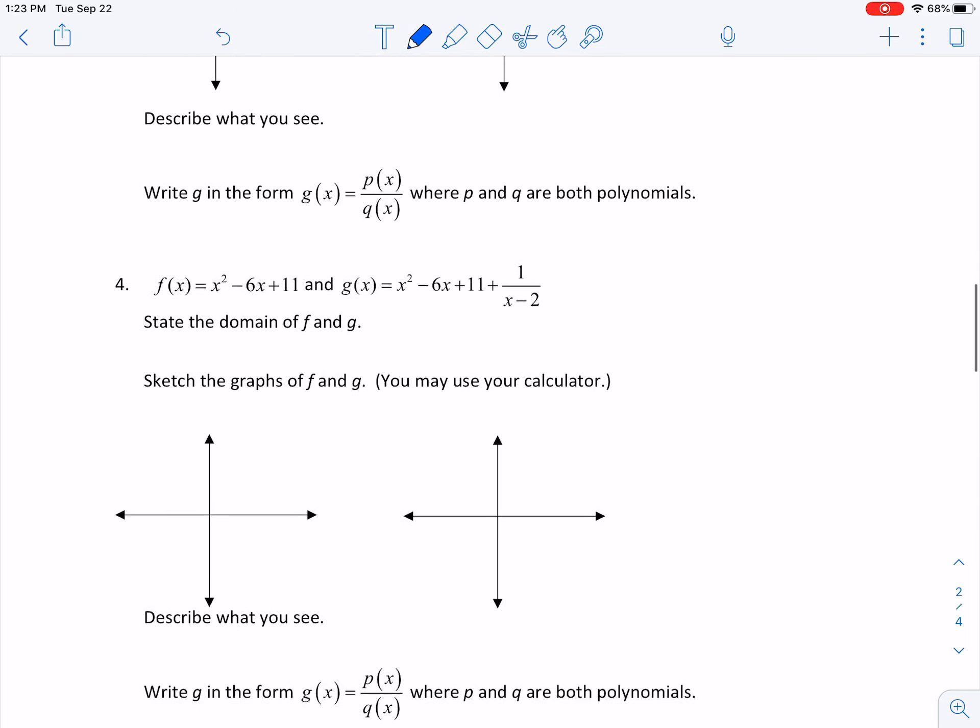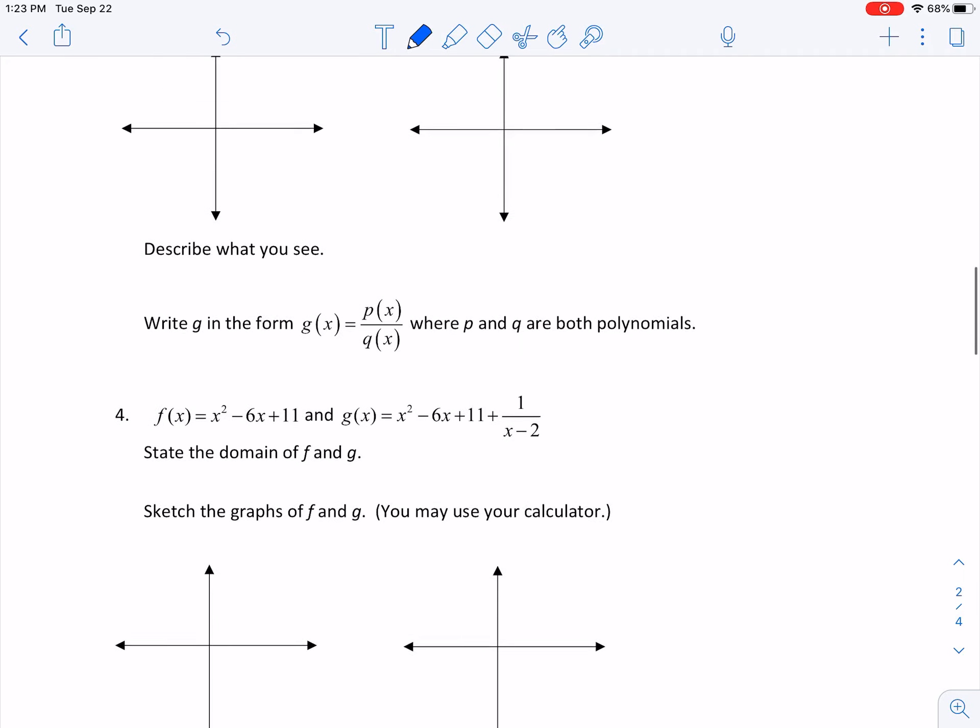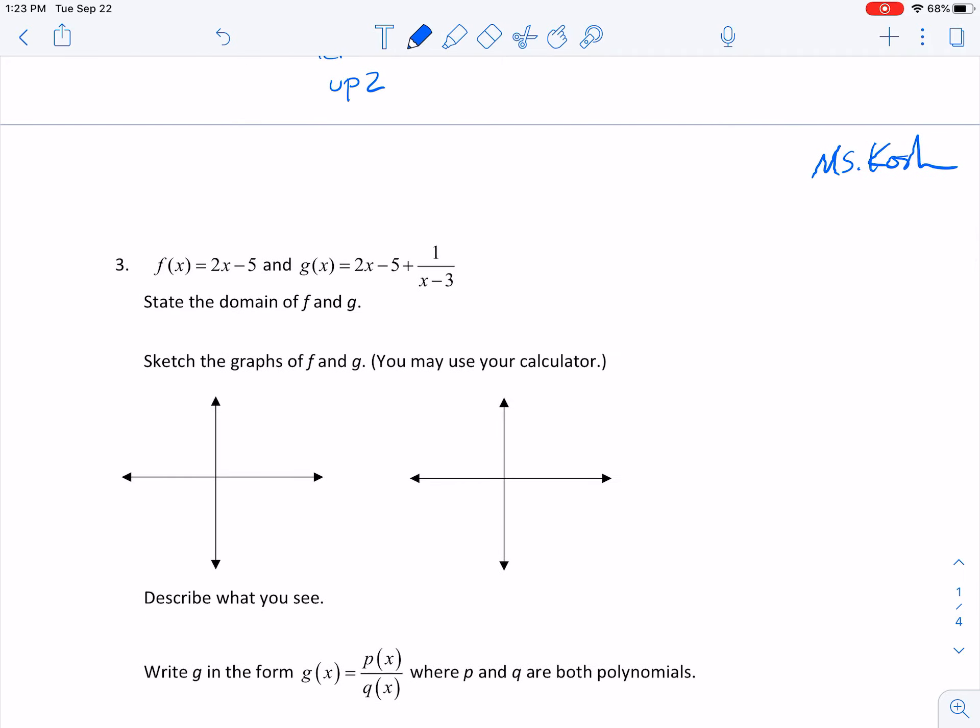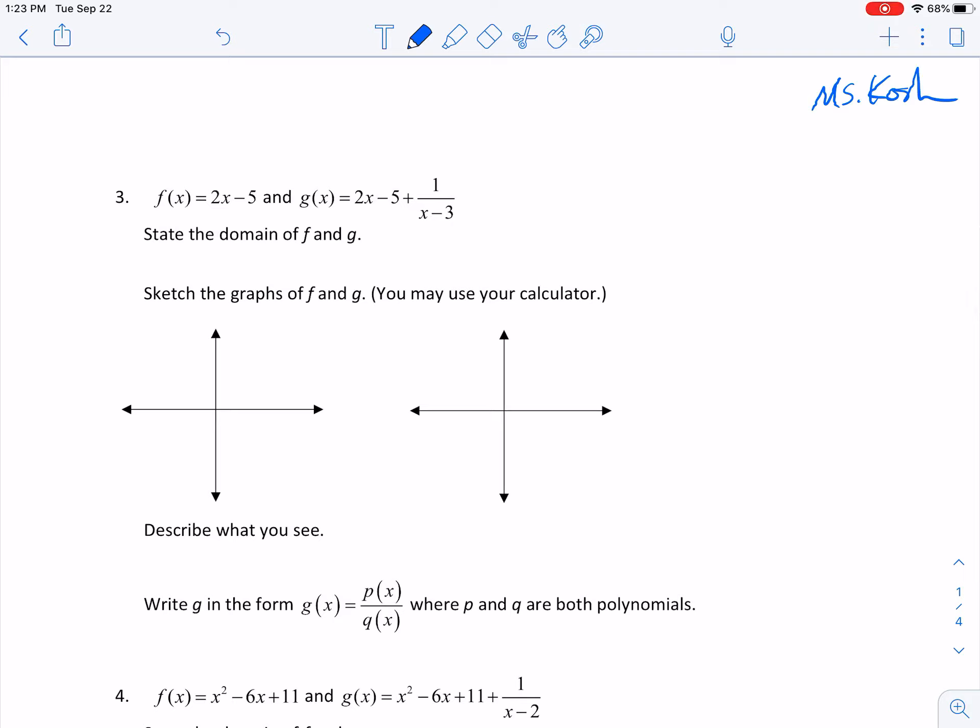On this one, what we're going to look at for these two is we're going to take advantage of Desmos. So what I have done, they ask us to graph f and g. And so f, you'll notice, is a line, and g is a line plus this 1 over x minus 3. So when we think about, we should know what this looks like. It goes through, it has a y-intercept of negative 5 and a slope of 2.